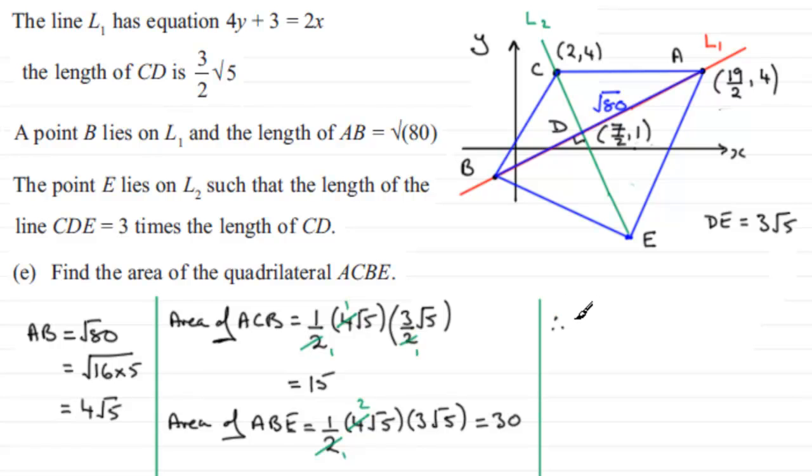So when it comes to the total area, I can say that therefore the area of the quadrilateral ACBE is going to be the sum of those two areas: 15 plus 30. In other words, an area of 45.